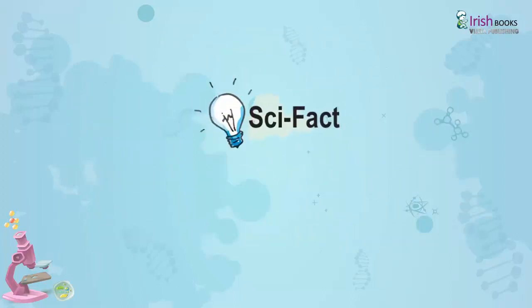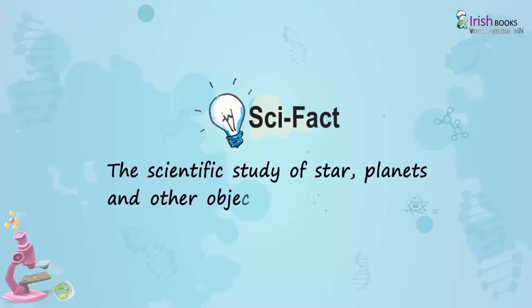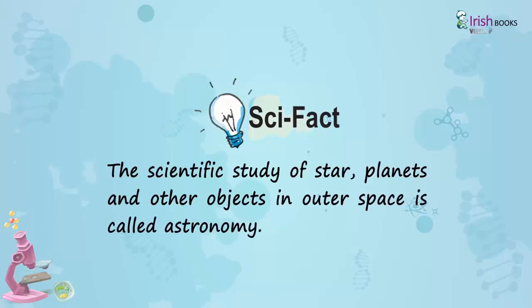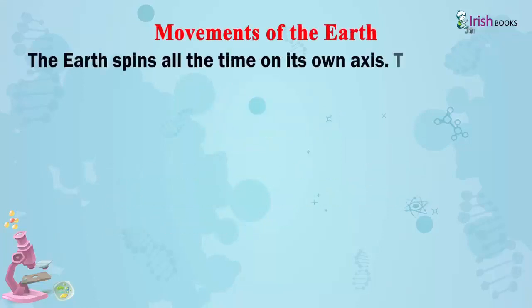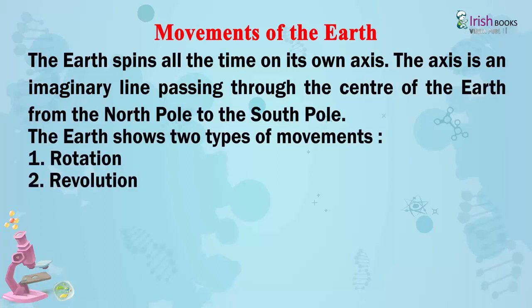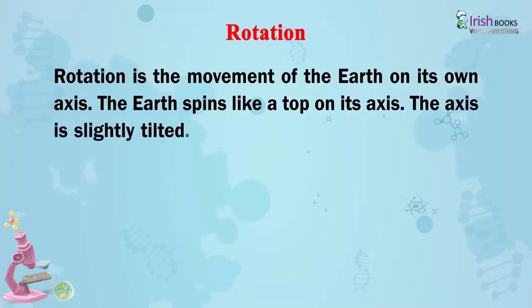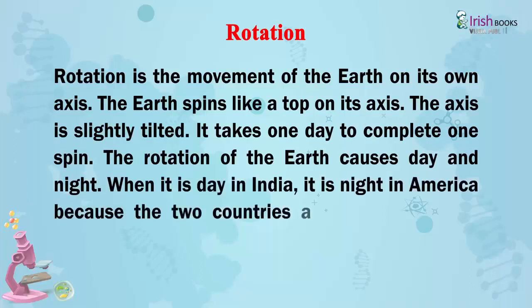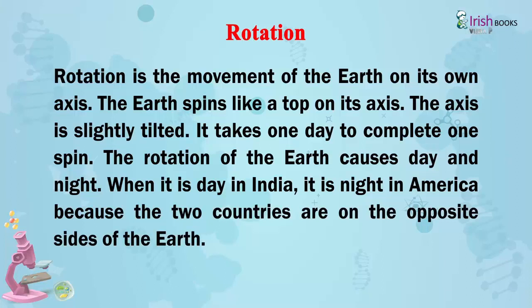Scientific Fact: the scientific study of stars, planets and other objects in outer space is called astronomy. The earth spins all the time on its own axis. The axis is an imaginary line passing through the center of the earth from the north pole to the south pole. The earth shows two types of movements: Rotation and Revolution. Rotation is the movement of the earth on its own axis. The earth spins like a top on its axis. The axis is slightly tilted. It takes one day to complete one spin. The rotation of the earth causes day and night. When it is day in India, it is night in America because the two countries are on opposite sides of the earth.